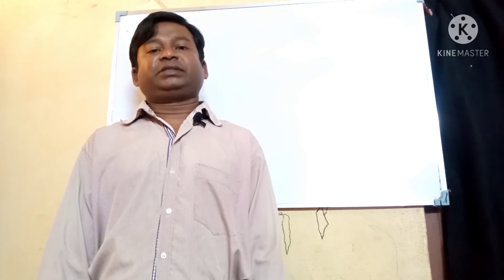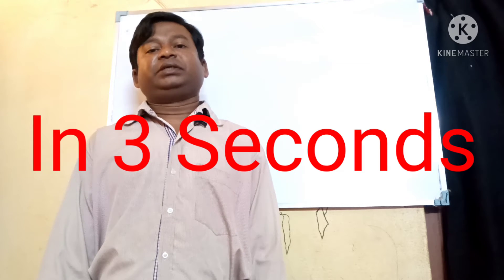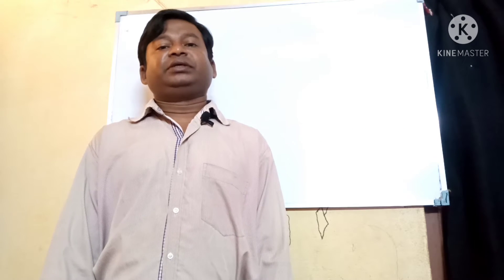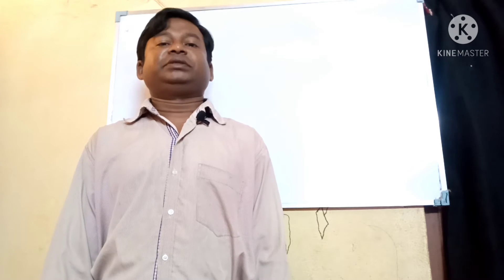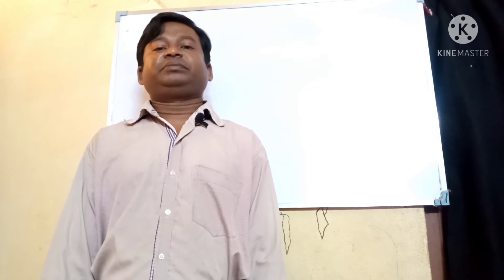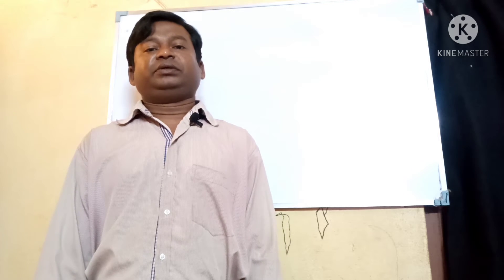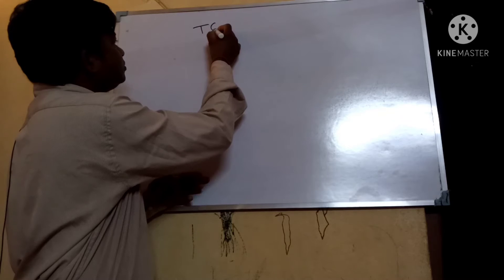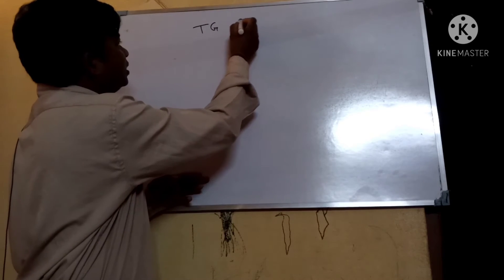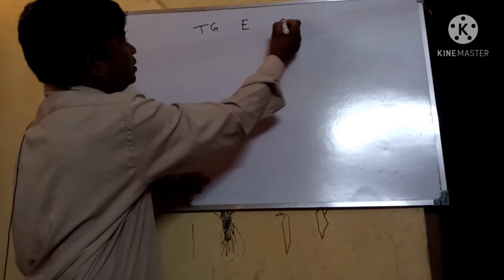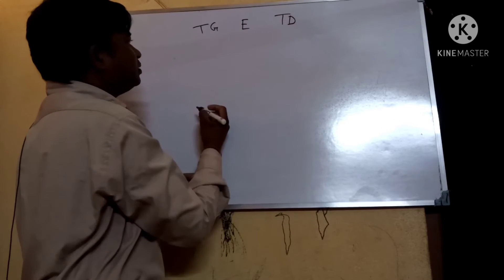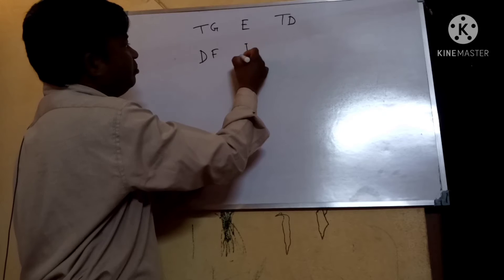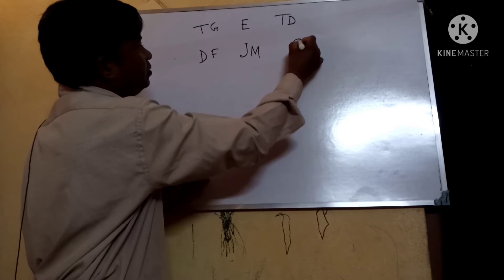In three seconds. The rule is: TG, E, TD, DF, JM, QC.